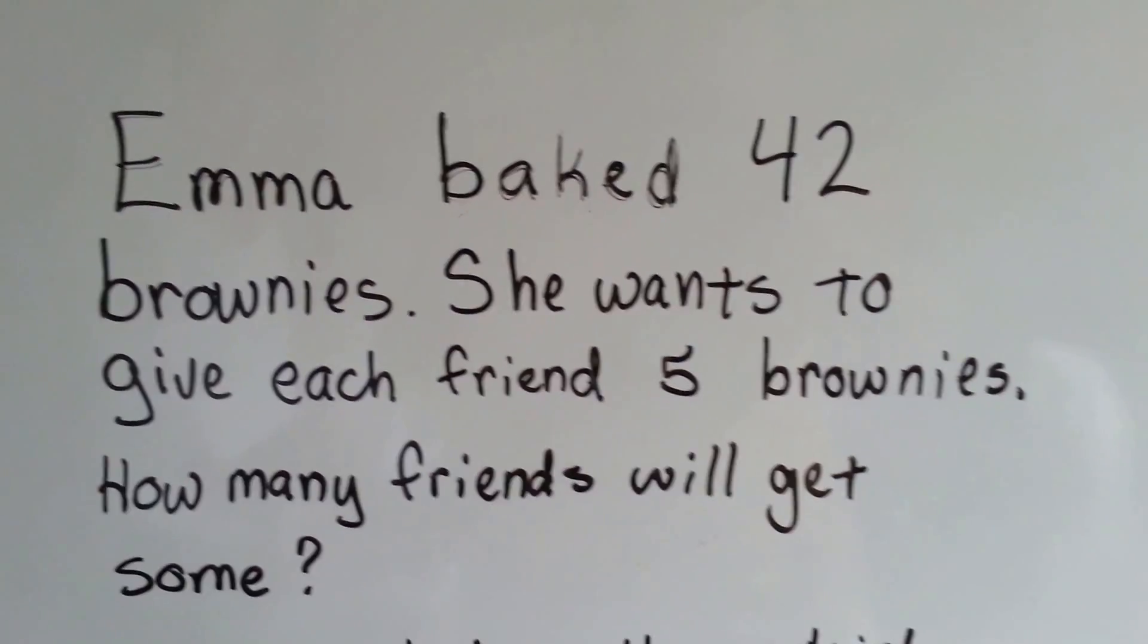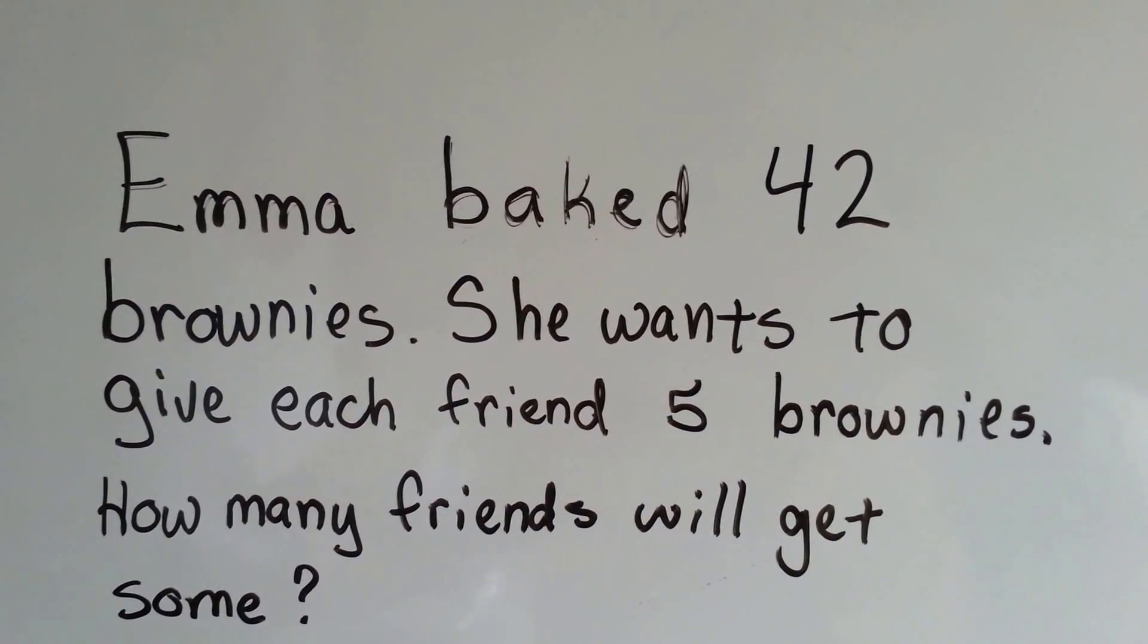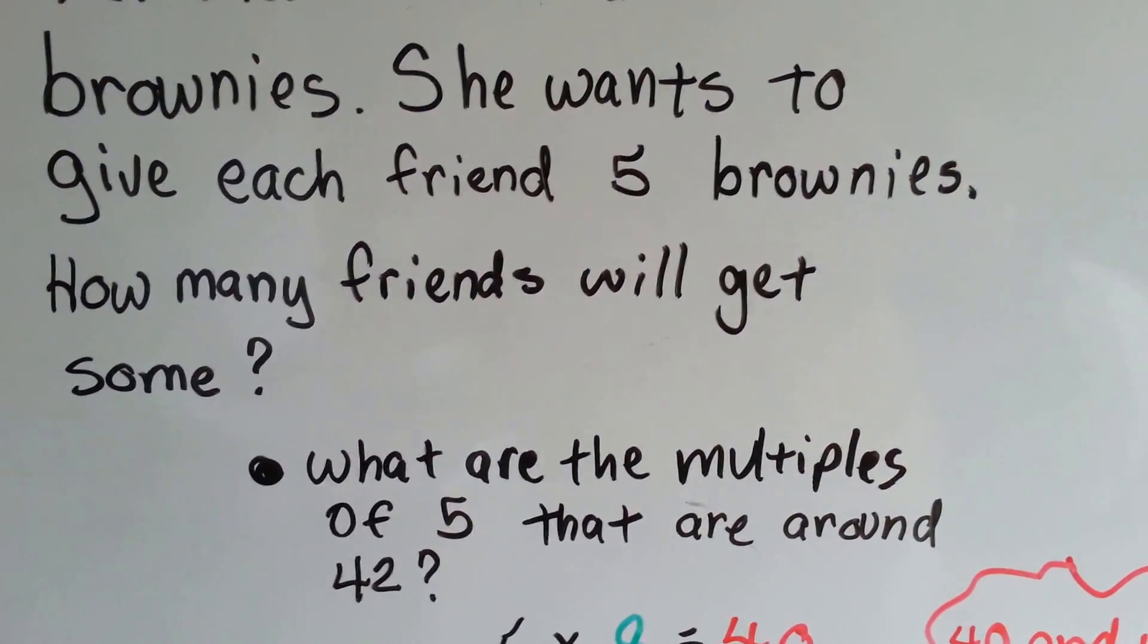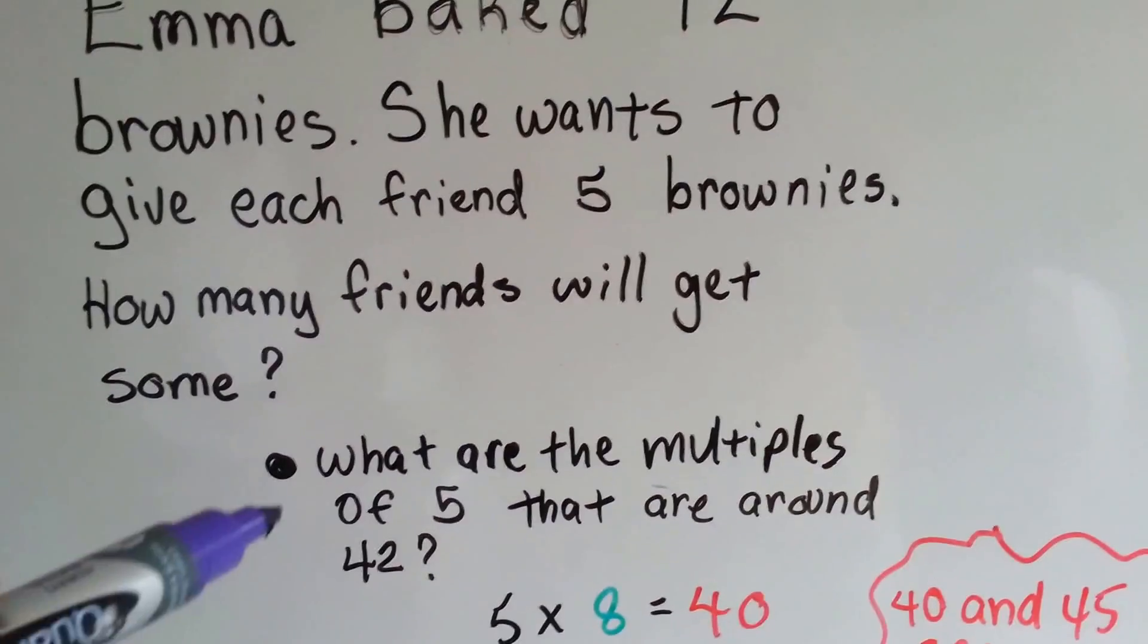So let's say Emma baked 42 brownies. She wanted to give each friend 5 brownies. How many friends will get some? What are the multiples of 5 that are around 42? That's what we ask ourselves.